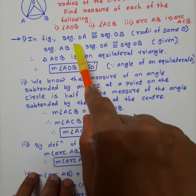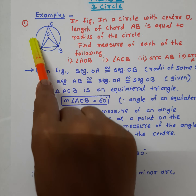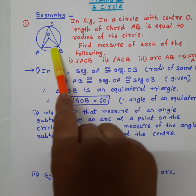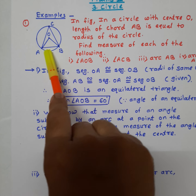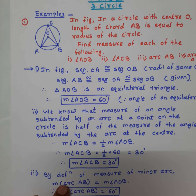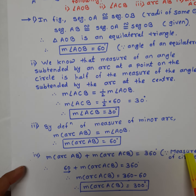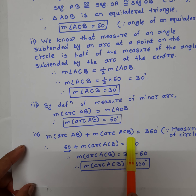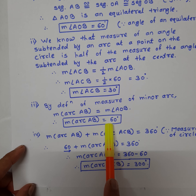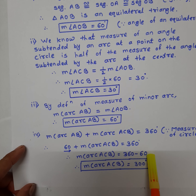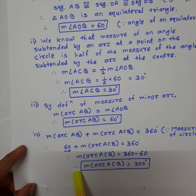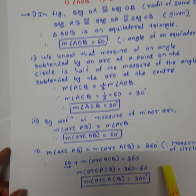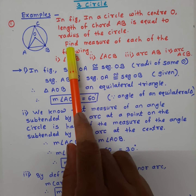Here, arc ACB and arc AB — if we add these two arcs, arc ACB and arc AB, they form a complete circle. The measure of a full circle is 360 degrees. Therefore we can write: arc AB plus arc ACB is equal to 360 degrees. We know the measure of arc AB is 60 degrees. Substituting and transferring to the right side, we get 360 minus 60, which equals 300 degrees. Therefore, arc ACB is equal to 300 degrees.